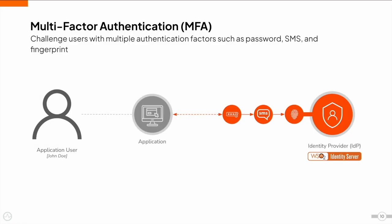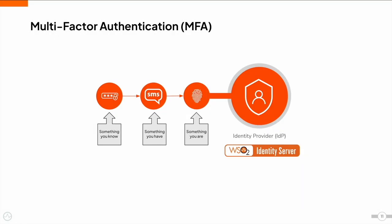In the past, a username and password were more than enough to authenticate a user. With the advancement of technology, password-based authentication no longer securely protects user accounts, and there are numerous attacks that can easily break it. Multi-factor authentication, or MFA, emerged as an answer to this problem. It creates a layered defense and makes it more difficult for an unauthorized person to access a target system. Authentication factors in MFA rely on two or more independent credentials from three categories: knowledge factors (something you know, such as a password), possession factors (something you have, such as a mobile phone), and inheritance factors (something you are, such as a fingerprint). With a combination of two or more of these factors, the user is authenticated.